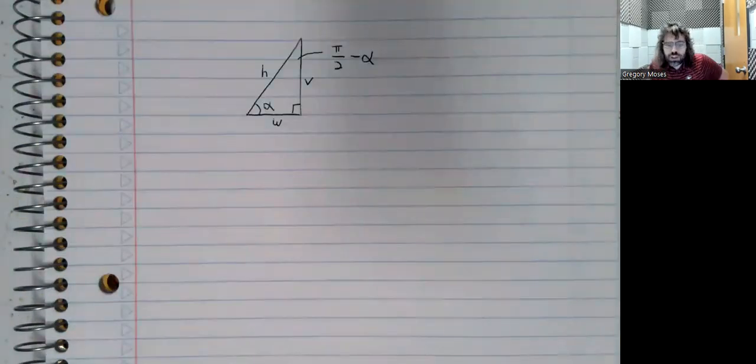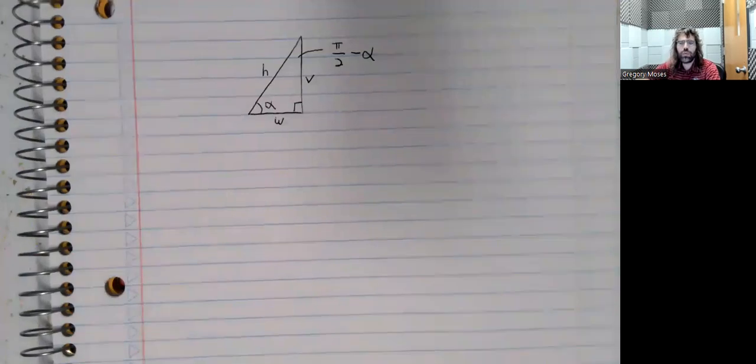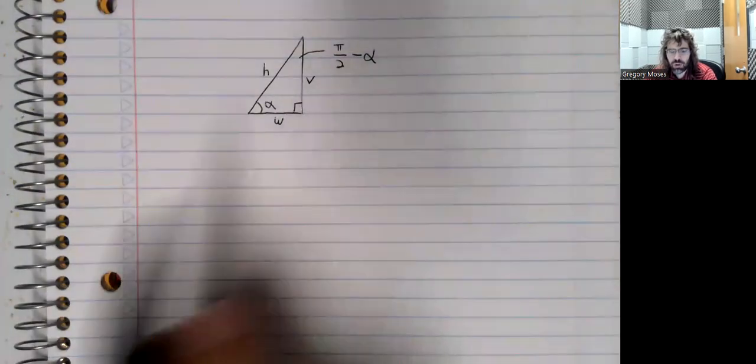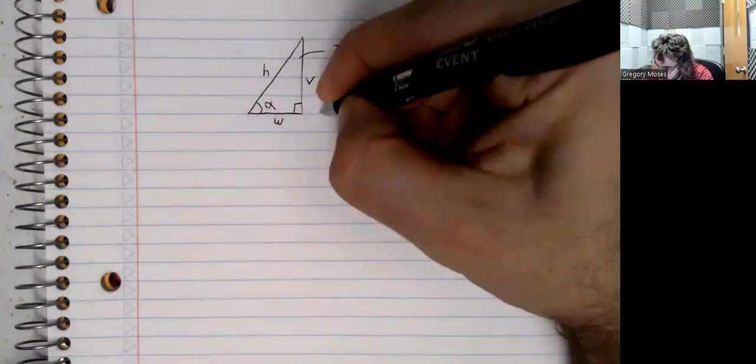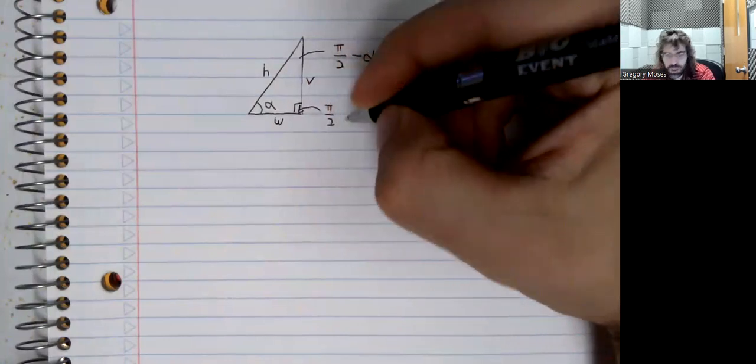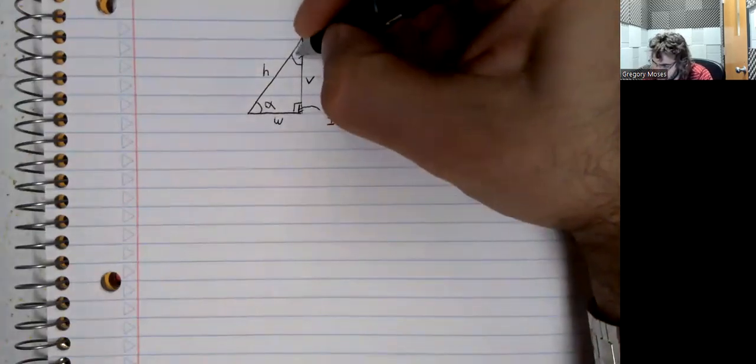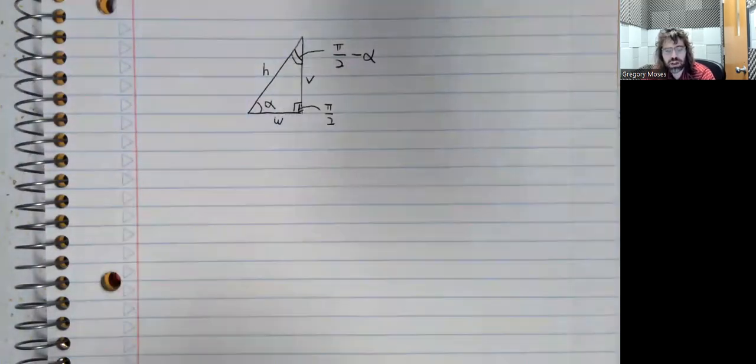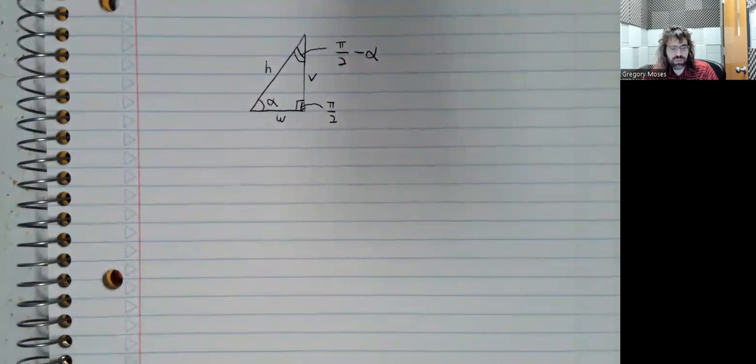Now, let's look at this right triangle. We're measuring angles in radians here. So a right triangle, or rather, any triangle, has pi radians. A right angle is pi over 2 radians. So for these angles to all add up to pi, if this is pi over 2 and this is alpha, then this angle up here is pi over 2 minus alpha.